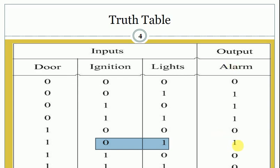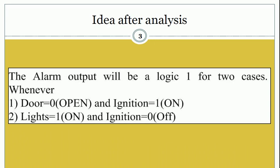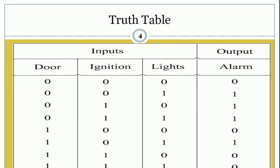Otherwise, for all other minterms, the output of alarm is equal to zero. This is the truth table. A truth table is the logical representation of the theoretical idea. Here is the theoretical idea and we just represent it logically by a truth table.